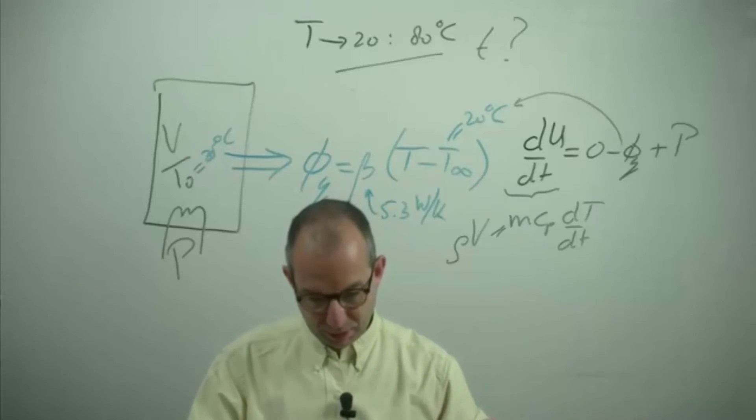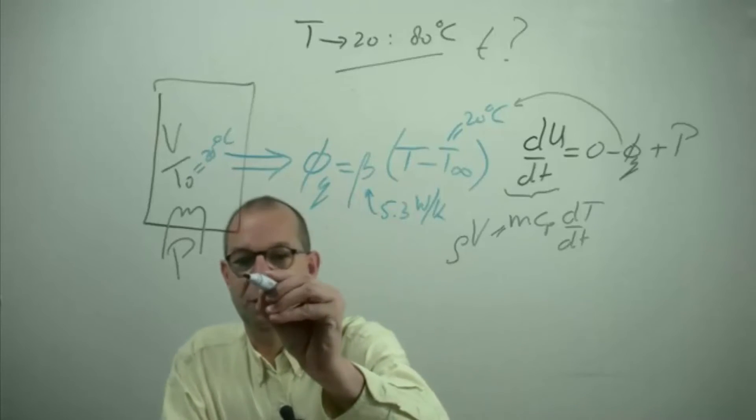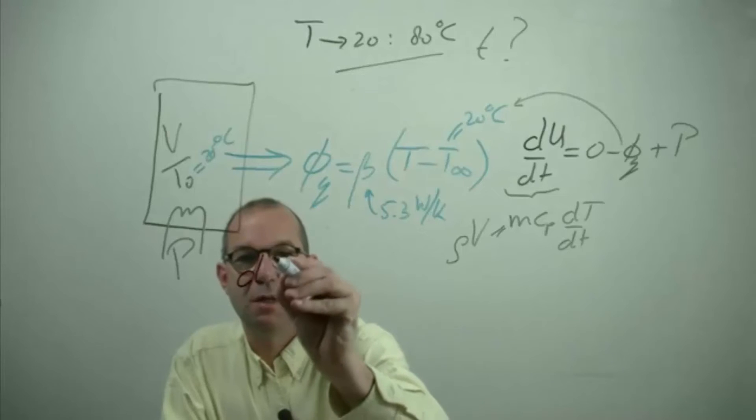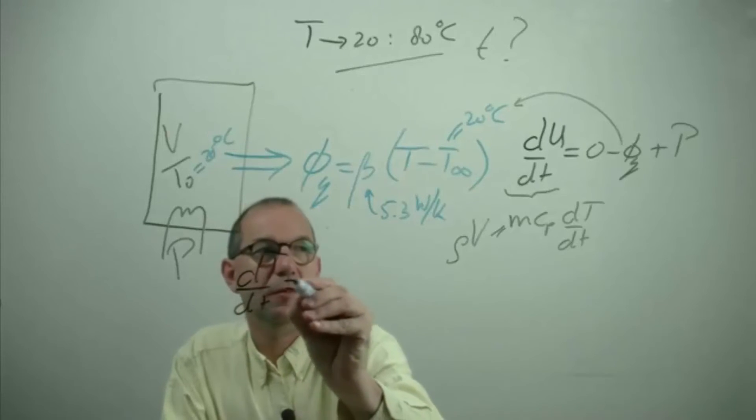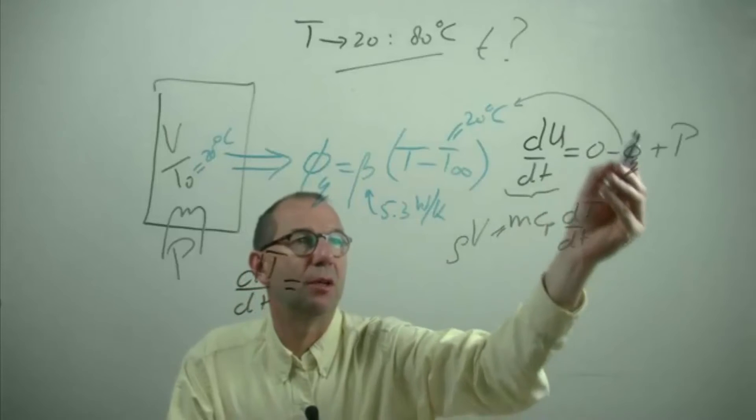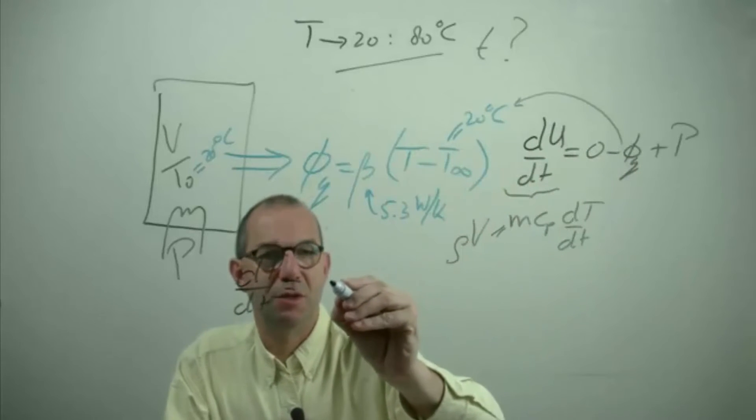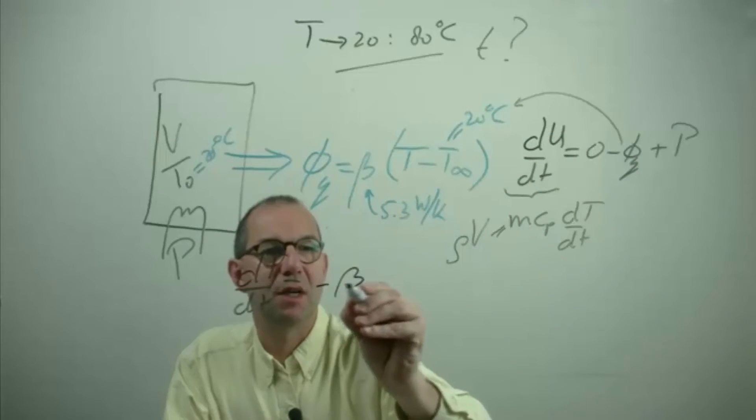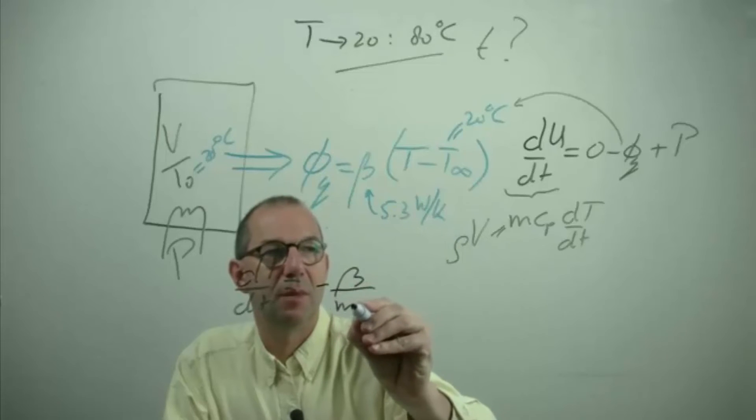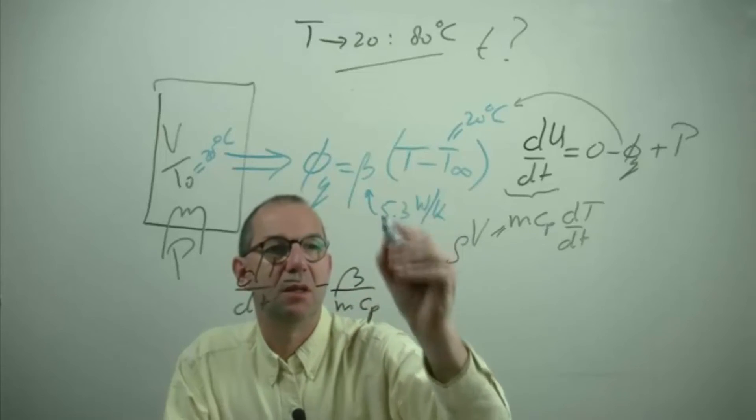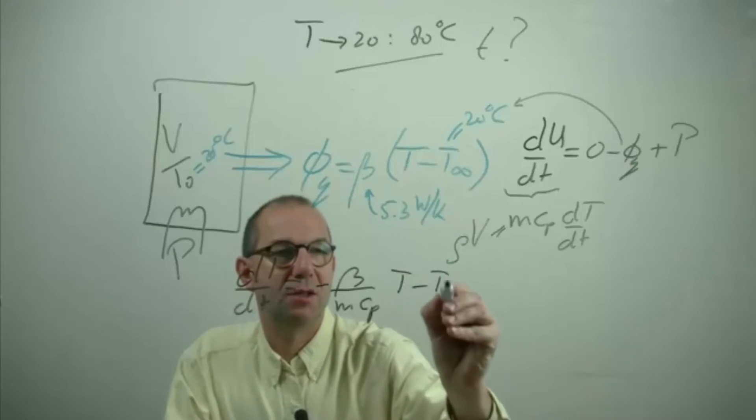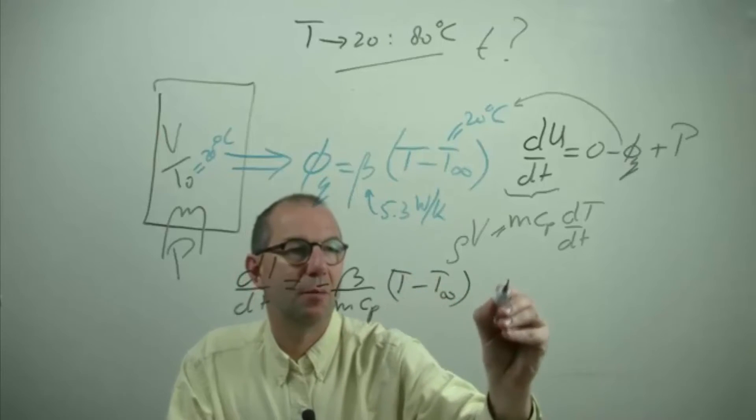Thus I can write down the differential equation for the temperature which reads as dT/dt equals this one contains temperature so that it's going to be minus beta over m cp times T minus T of the surroundings plus P.